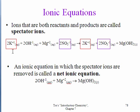So for example, let's look at this complete ionic equation for the reaction of potassium hydroxide and magnesium nitrate. Here I have potassium AQ on the reactant, and potassium AQ as a product.